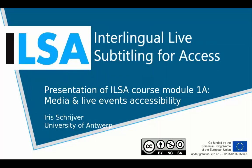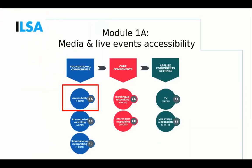Module 1A is one of the three foundational components of the EOSO course, as presented here on the slide in a graph that you might recognize from a previous presentation. Module 1A is dedicated to media and live events accessibility and amounts to one ECTS credit, which means that it will take a student approximately 25 to 30 hours to study the materials of this module.